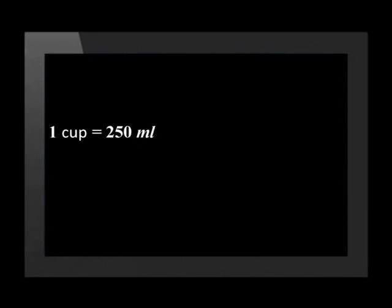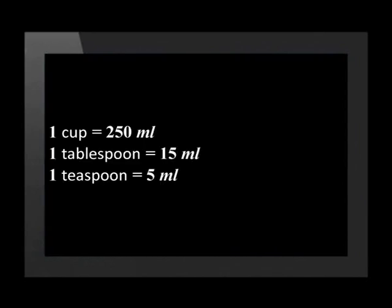In cooking, cups and spoons are often used for measurement. It is often simpler to measure liquids such as water or milk and solids such as flour and sugar in cups and spoons. One cup equals 250 millilitres. One tablespoon equals 15 millilitres. One teaspoon equals 5 millilitres. A cup is a larger instrument of measurement than a tablespoon, and a teaspoon is a small unit of measurement.